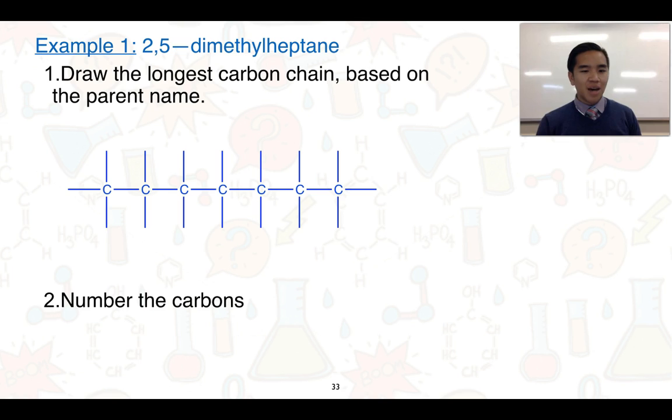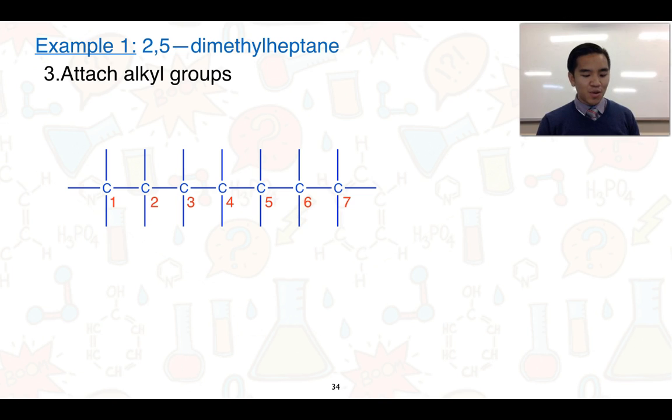Step two, let's number the carbons, and the easiest way to do that is from left to right. So one through to seven there, showing us it's a heptane. Third step is to then attach any alkyl groups.